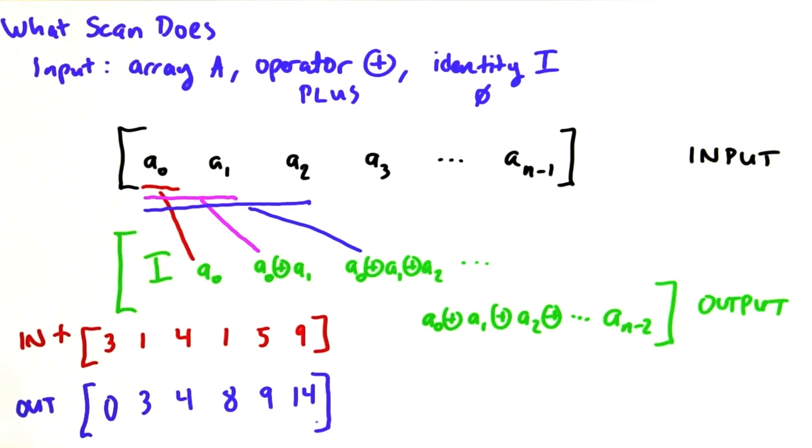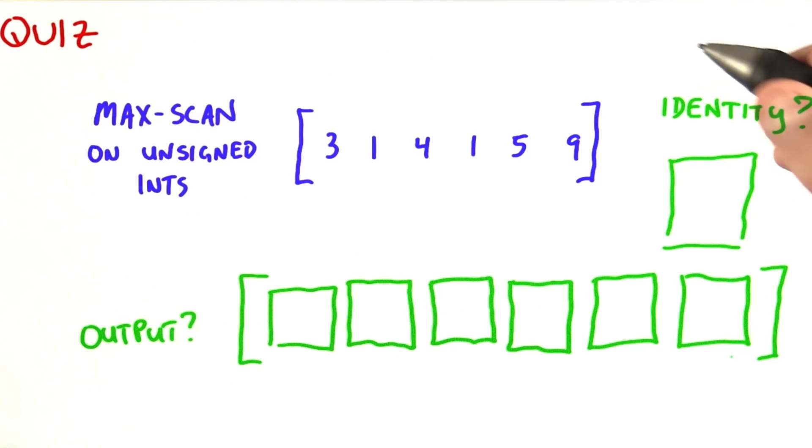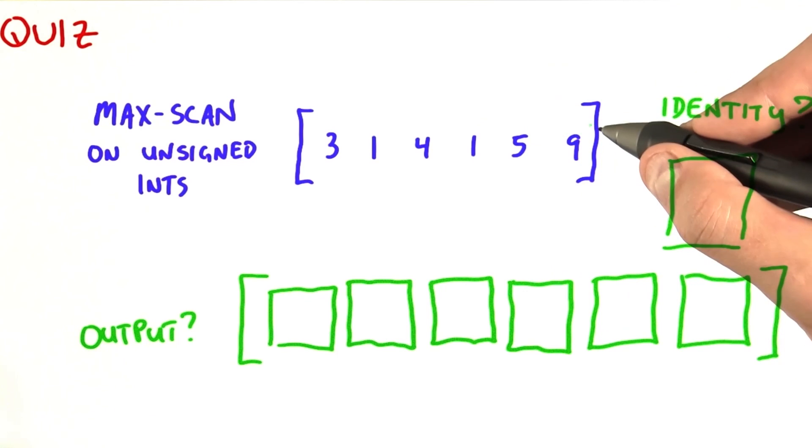Now let's try doing an example with a different binary associative operator. So as a little quiz, let's make sure we understand. Let's try a max scan on an array of unsigned integers.